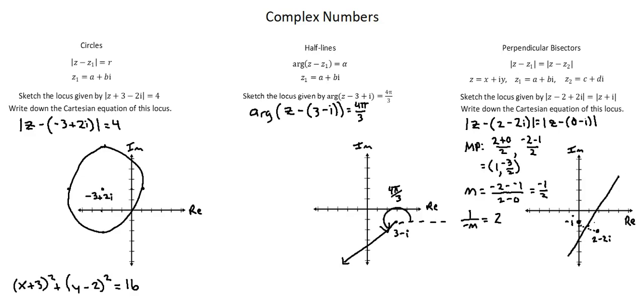And now, returning to the perpendicular bisectors example, our second requirement is to write down the Cartesian equation of this locus. This will be in the form y equals mx plus c. We know our m value is 2 for the perpendicular bisector. We know one point on the perpendicular bisector is 1 negative 3 over 2. And with that information and some algebra, we can create the line equation y equals 2x minus 7 over 2.